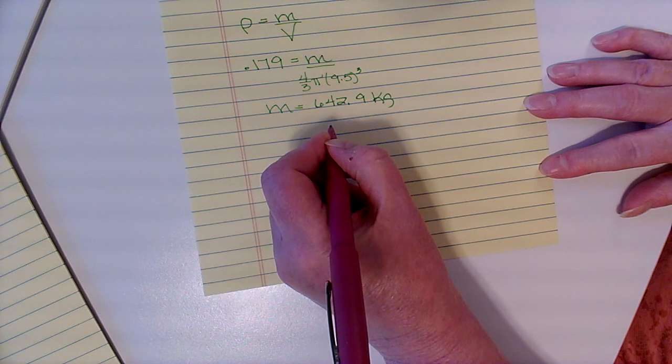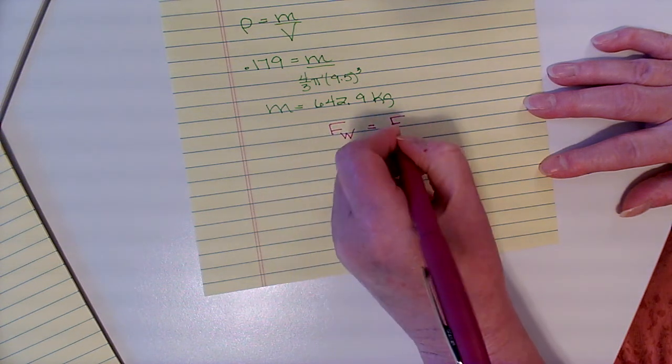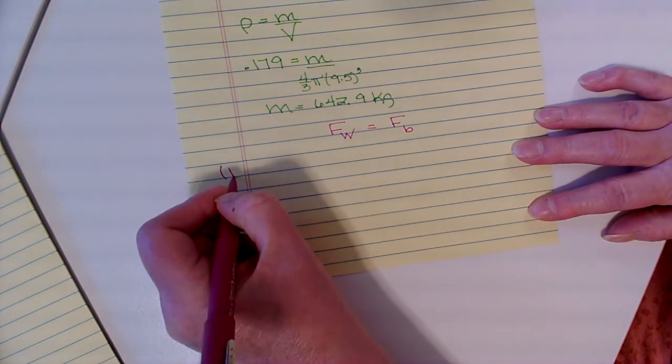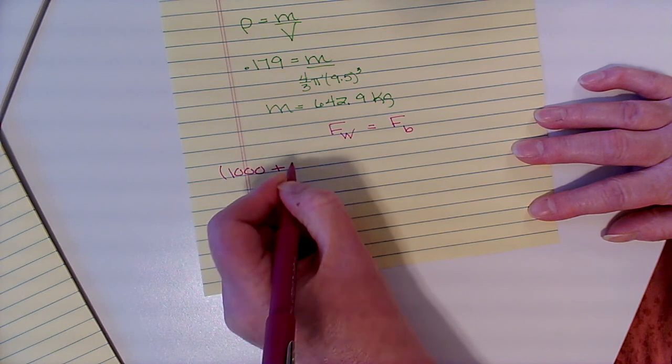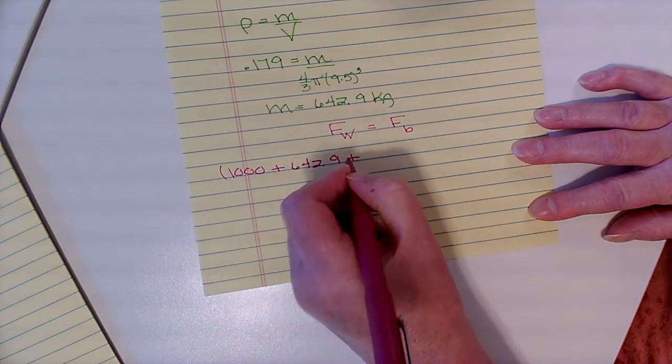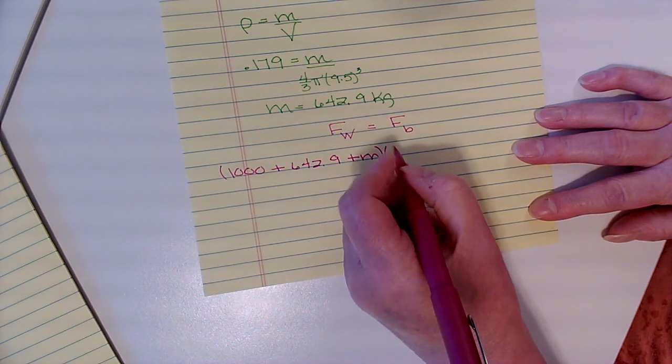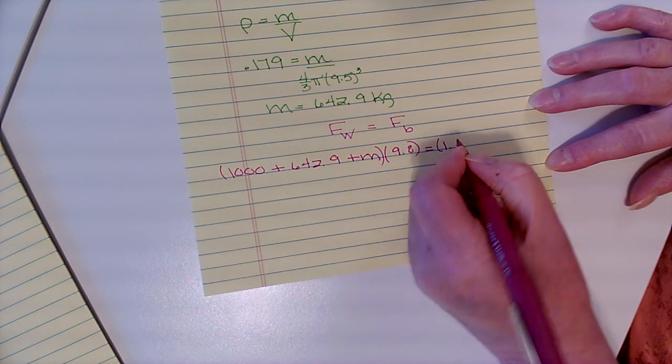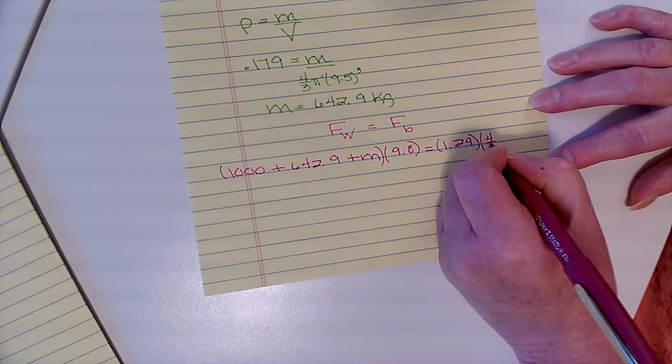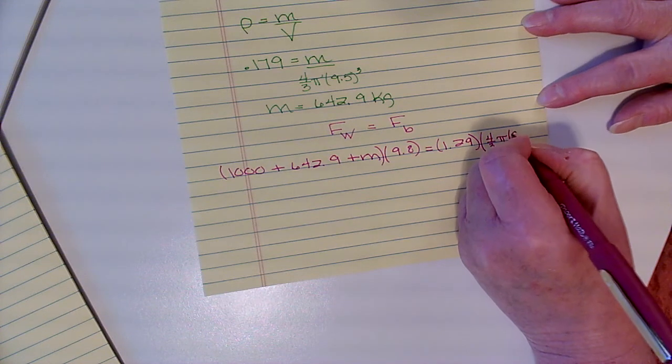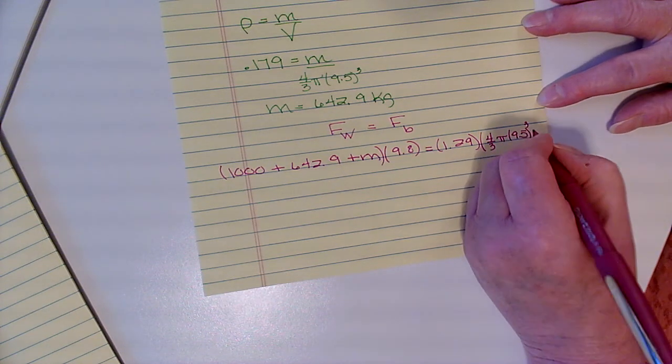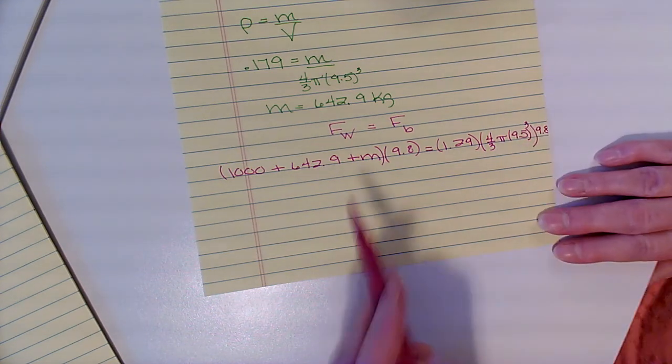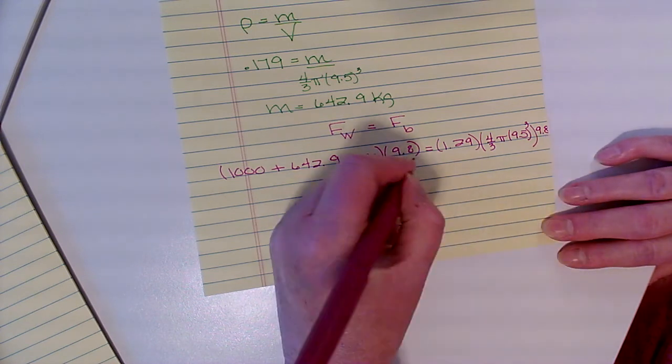Because I want my hot air balloon to float, I'm going to set these two things equal to each other. So Fw equals Fb, and Fw is going to be (1000 + 642.9 + m) times g, so that's 9.8. And then we have the buoyant force, which is 1.29 times 4/3π times 9.5³ times g, 9.8 here. I have a 9.8 here and a 9.8 here, so I can cancel those.